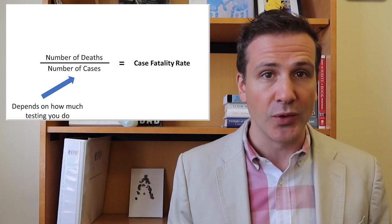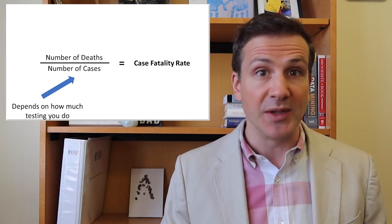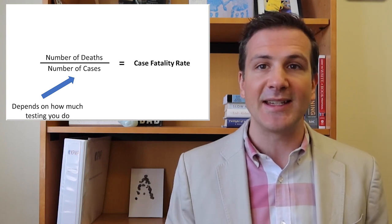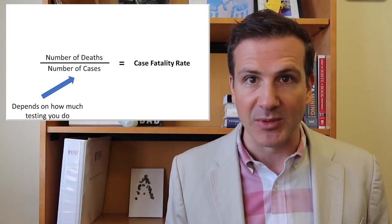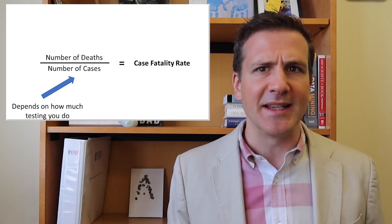We tend to test those who are symptomatic, for example. And even among those with symptoms, those with worse symptoms, the type that might land you in the hospital, are more likely to get tested than those with less severe symptoms. But the second problem with case fatality rate is more insidious, and it has to do with the lag between cases and deaths.